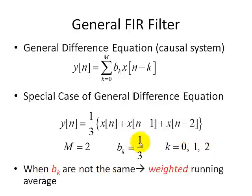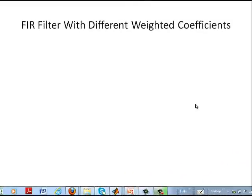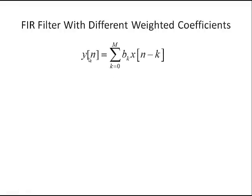When the B_k's do not have the same weights as in this general difference equation — that being a special case — then we call it a weighted running average, and here's an example of that. So here's an example of a finite impulse response filter, or FIR filter, with different weighted coefficients. We'll start off with our generalized difference equation, where y is our output, x is our input, B_k are filter coefficients, and m plus 1 describes the length of this filter.